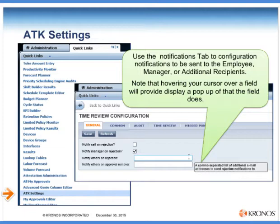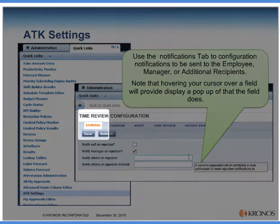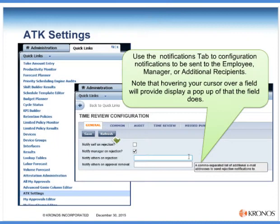The general tab is where we handle notifications — whether or not we want to notify an employee on rejection, a manager, or others via a comma-separated list of email addresses upon rejection, or others when approval has been removed.